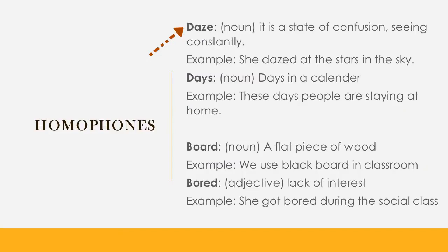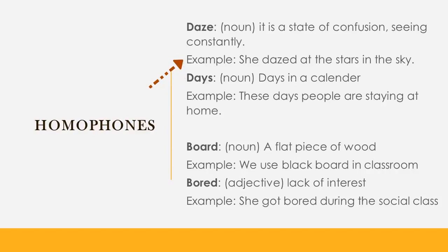The first homophone pair: 'daze' (D-A-Z-E) means a state of confusion or staring constantly — for example, 'She dazed at the stars in the sky.' And 'days' (D-A-Y-S) means days in the calendar — for example, 'These days people are staying at home.' Both are pronounced the same way, but their spellings and meanings are different.